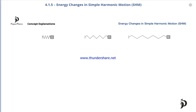As you can see, there is a small object attached to the spring. As the object oscillates back and forth and the spring reaches its fully compressed position, the object is at one of its maximum displacement positions. Since the spring is fully compressed, elastic potential energy is stored in the spring. At the maximum displacement position, this elastic potential energy is at its maximum.